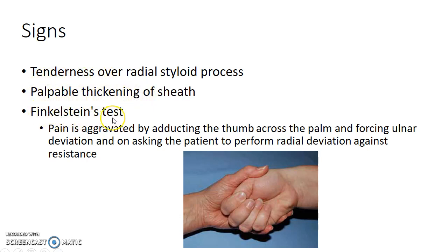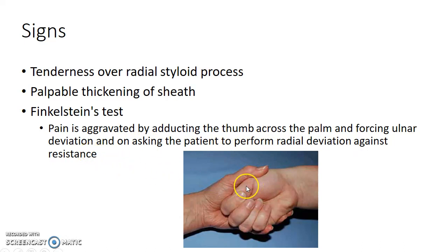Finkelstein's test is positive in De Quervain's tenosynovitis, and a positive Finkelstein's test is pathognomonic of the condition. The principle is that pain is aggravated by adducting the thumb across the palm and forcing ulnar deviation, and on asking the patient to perform radial deviation against resistance. Basically, you ask the patient to adduct the thumb across the palm and the examiner then forces ulnar deviation.